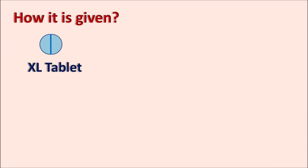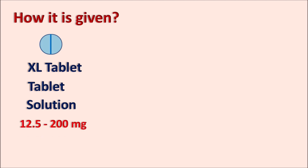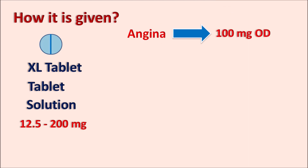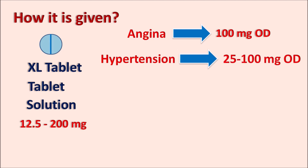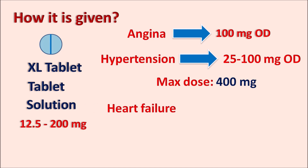Metoprolol is available as extended-release tablets, normal tablets, and IV solution, at dosing strengths ranging from 12.5 to 200 mg. The dose depends on the clinical indication. For angina, the initial dose is 100 mg once daily with a maximum of 400 mg per day. For hypertension, the initial dose is 25 to 100 mg once daily with a maximum of 400 mg per day.